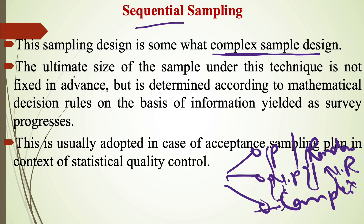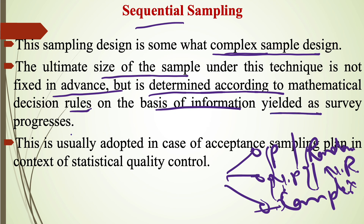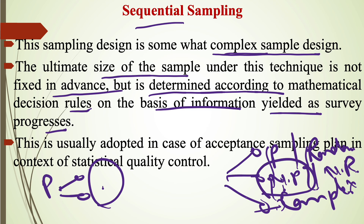In this type of sampling, the ultimate size of the sample is not fixed in advance, but is determined according to mathematical decision rules on the basis of information yielded as the survey progresses. In probability sampling, we use criteria of probability or randomness to select sample size, whereas in non-probability sampling, we use convenience or reliability. But in sequential sampling, the size cannot be fixed in advance or taken conveniently — it is determined according to mathematical decision rules on the basis of information gathered as the survey progresses. So it is based on collection of data.